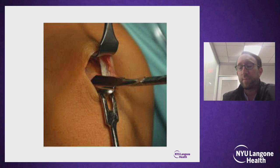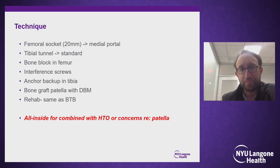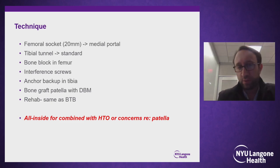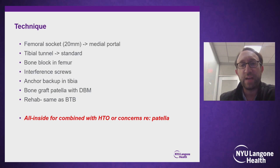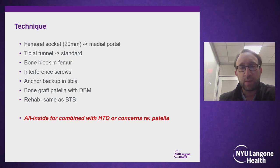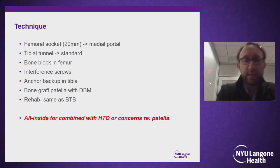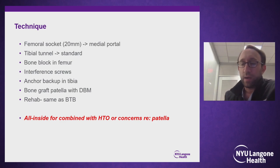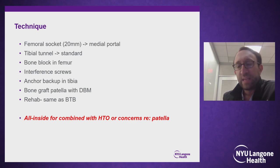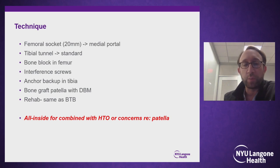For the femoral socket, I drill through the medial portal, just as Mabel described. The tibial tunnel is done in the standard fashion. The bone block typically goes into the femur with a metal interference screw, and I always use an anchor to back this up in the tibia, such as a knotless anchor device. For the bone graft site on the patella, I put some DBM to endorse healing. The rehab is pretty much the same as BTB. I typically go all-inside, all-soft-tissue rather than bone block when combining this with an HTO or if there are concerns about the patella.